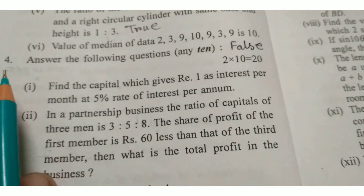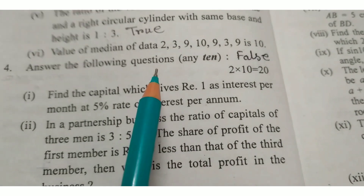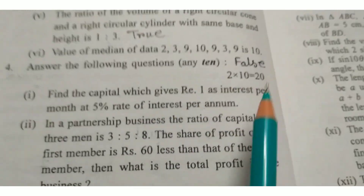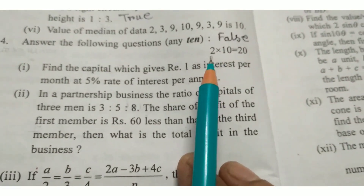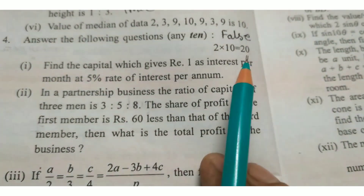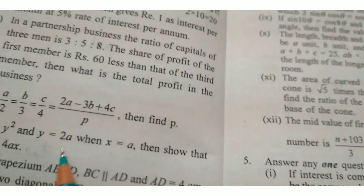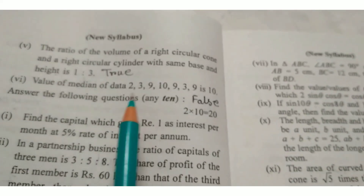Next, Question number 4: Answer the following questions, any 10. Every question carries 2 marks — 2 into 10 equals 20 marks. There are 12 questions in total and you answer any 10.